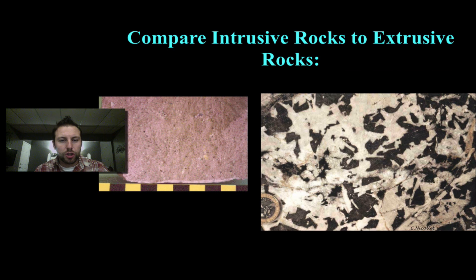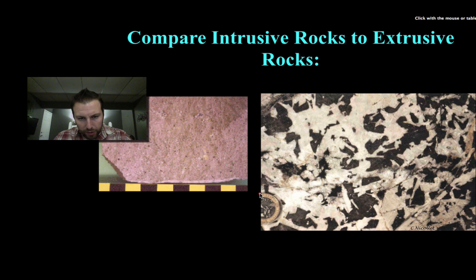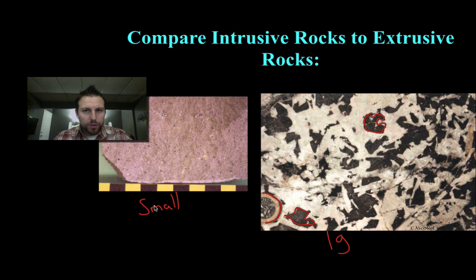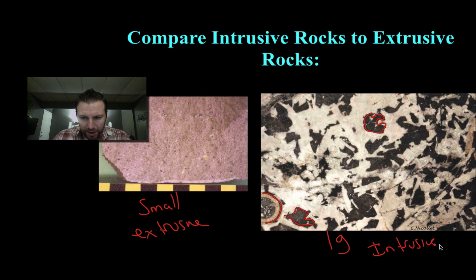Looking at two igneous rocks side by side with a coin for scale, you can see the crystals on one side are relatively large — white and darker minerals, probably mica, scattered throughout. On the other side, there are very small specks — small crystals. Small crystals mean extrusive; large crystals mean intrusive. It's pretty straightforward to break down the two classifications.